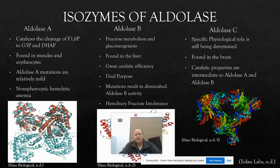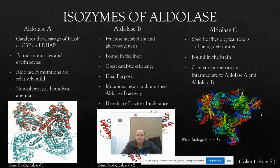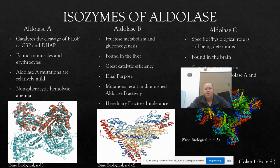Aldolase C, if I'm being quite honest, its specific physiological role is hard to find and still being studied. We do know that it is found in the brain and other neurological tissues, and it is a catalytic intermediate — it has a little bit of the catalytic properties of both aldolase A and aldolase B — but its physiological role is still being determined.